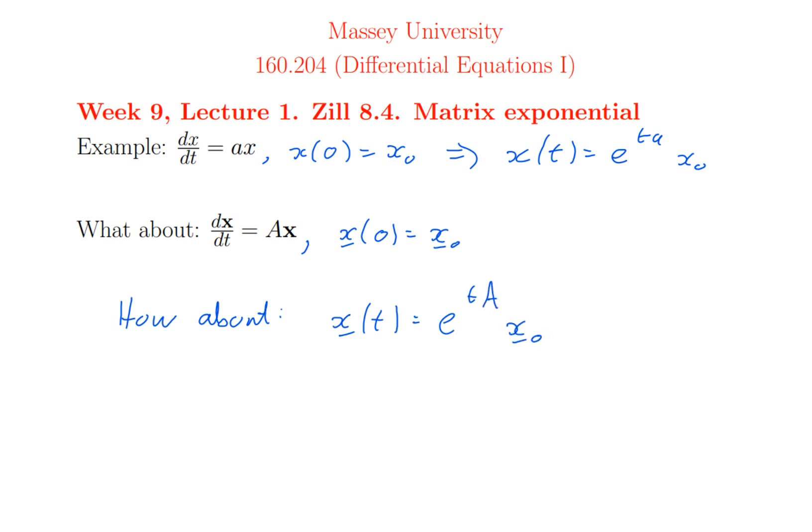If A is a matrix, an n-by-n matrix, t times A would be an n-by-n matrix, so then I'd have to go e to the power of a matrix, presumably getting an n-by-n matrix, and then multiply it by the vector. So the question is, does this even make sense? How would you define that so it would give you the solution of the differential equation?